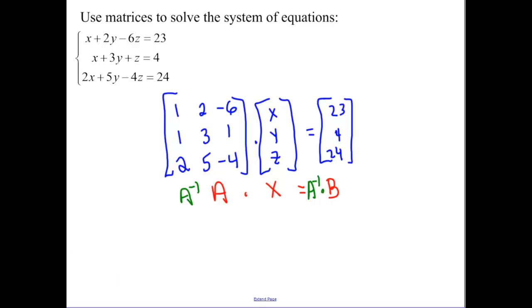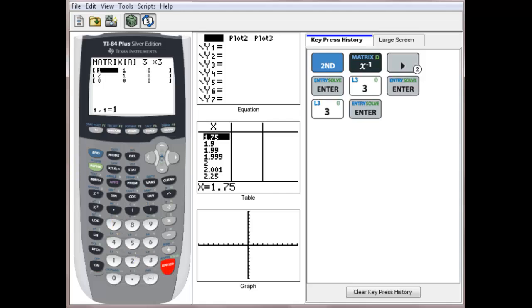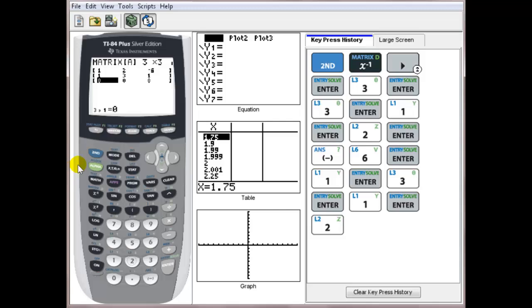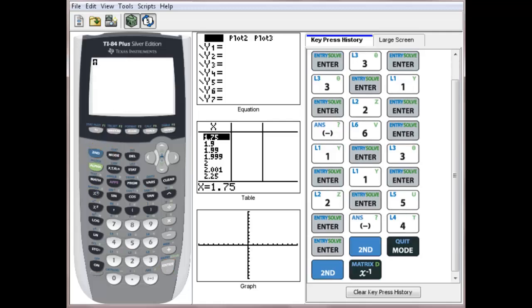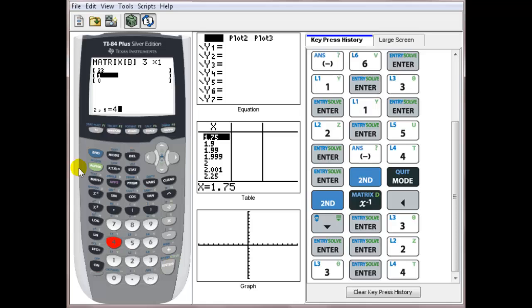Now inputting that back into our calculator. You go into your matrix, arrow over to edit, I want to edit A. I'm going to change that to be a 3 by 3 matrix. Now input our values. Exit back to your home screen. And we want to edit matrix B because that's now a 3 by 1 matrix. Make sure you change the dimensions to 3 by 1. And that was 23, 4, and 24.